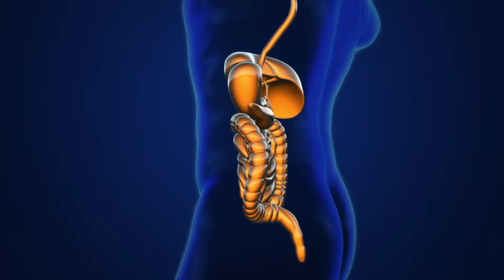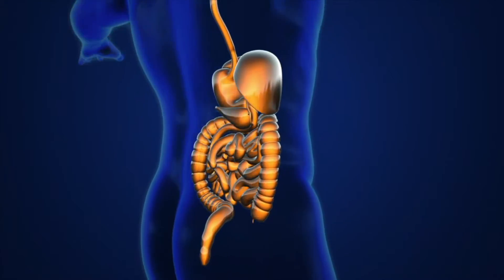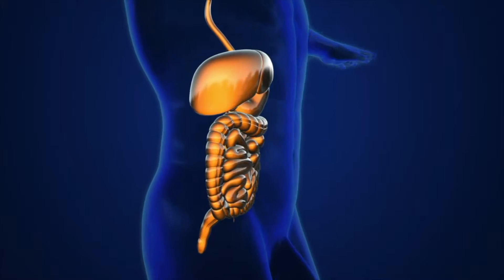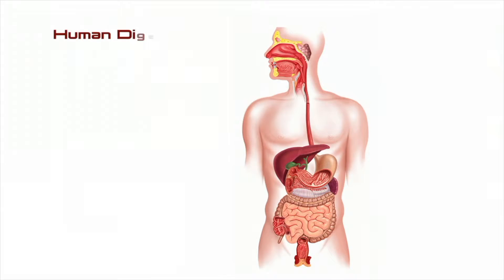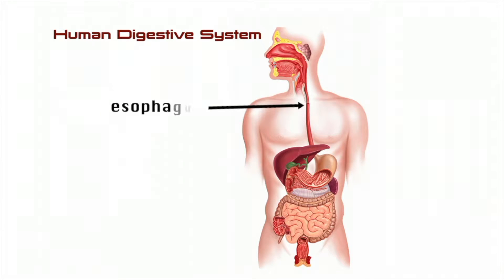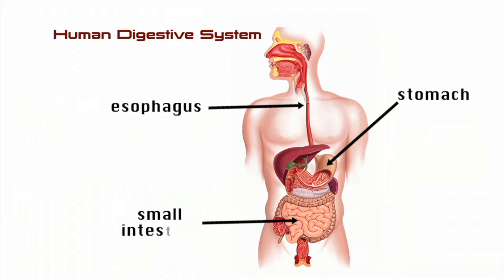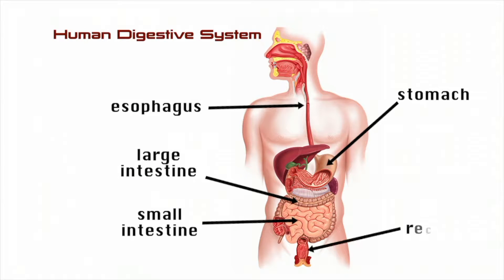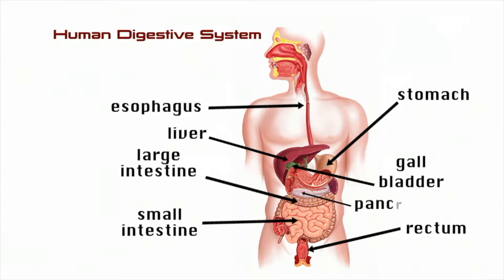In order to take advantage of food's nutrients, your digestive system changes food into fuel your body can use. The major organs of your digestive system are the esophagus, stomach, small intestine, large intestine, and the rectum. Other organs include the liver, the gallbladder, and the pancreas.